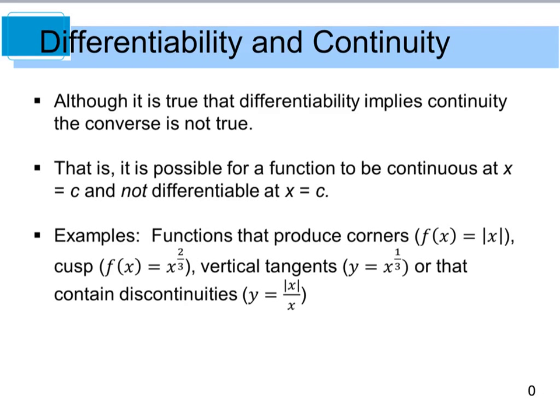Some examples of functions that would be either continuous and not have a derivative or just flat out don't have any derivative would be something like a graph that produces a corner.